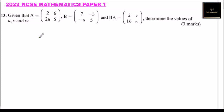Given that matrix A is equals to 2, 6, 2u, 5, B is equals to 7, minus 3, minus u, 5, and BA is equals to 2, v, 16, w, determine the values of u, v, and w.